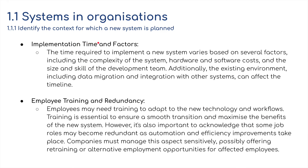We need to look at implementation time and factors. The time required to implement a new system varies based on several factors, including the complexity of the system, the hardware and software costs, and the size and skill of the development team. Additionally, the existing environment — including data migration and integration with other systems — can affect this timeline. If employees need to be trained, and there may be scope for redundancies, there might be job losses.